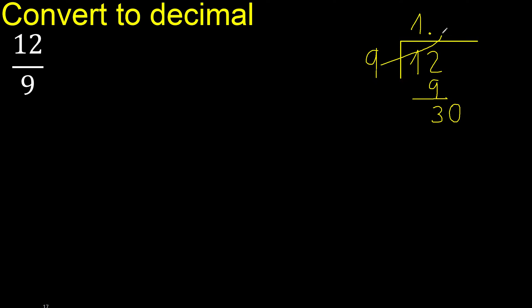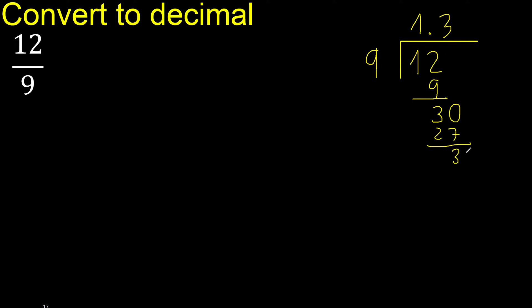9 multiplied by 4 is greater. 9 multiplied by 3 is 27 — ok, not greater. Subtract, then complete with 0 point. Ok, 30. 9 multiplied by 3 is 27.